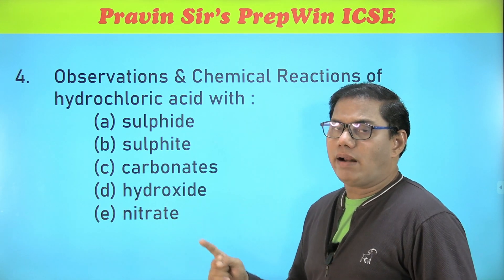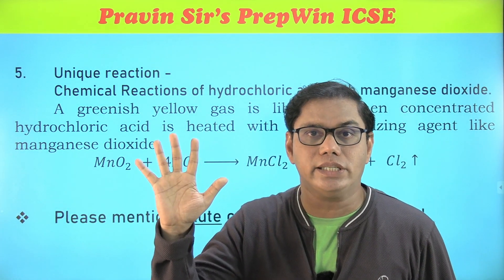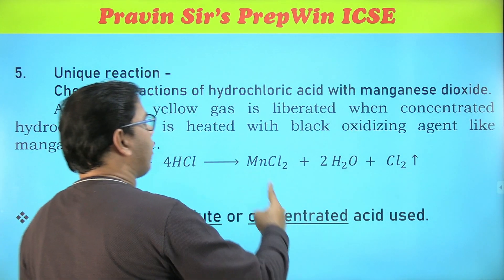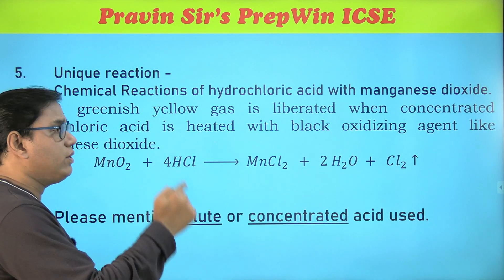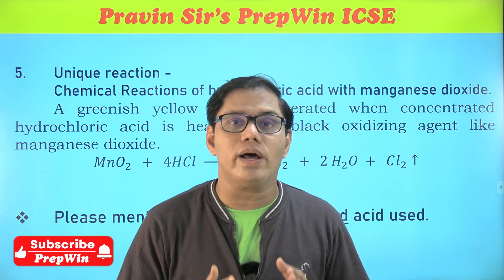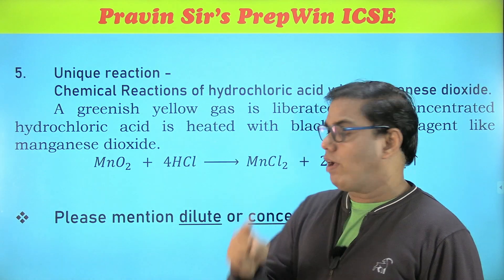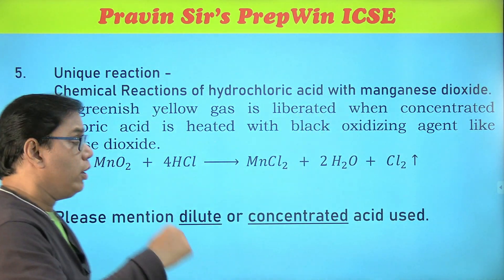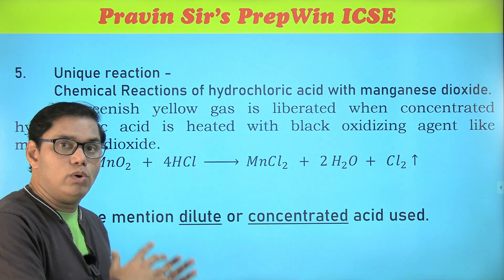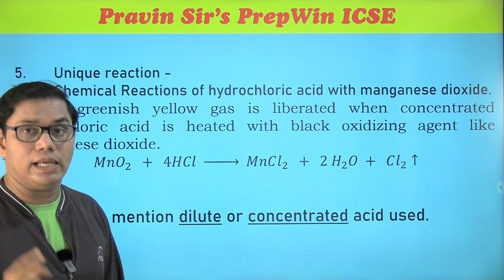I want to make a special prediction — prediction number five — a sure-shot, hundred percent question: the unique chemical reaction of hydrochloric acid with manganese dioxide. I have given the answer as well; please go through it. This question I feel is a sure-shot question in your chemistry paper. One very important instruction: whenever you write about an acid, you must mention which acid you are using — dilute or concentrated. If you don't mention dilute or concentrated, you are going to lose marks.